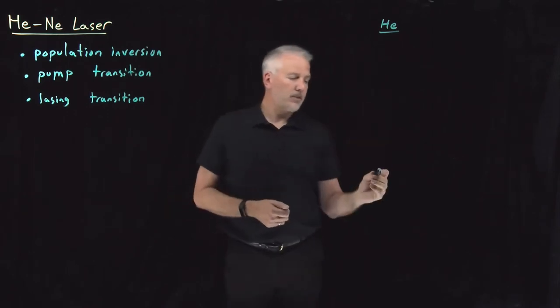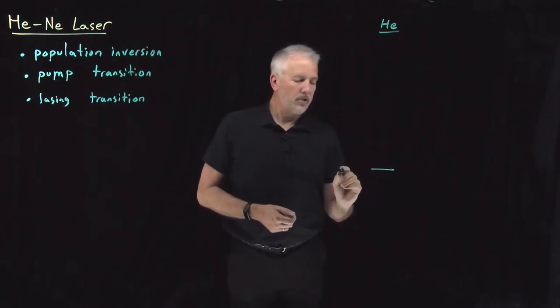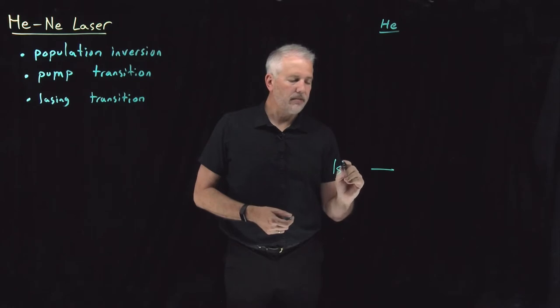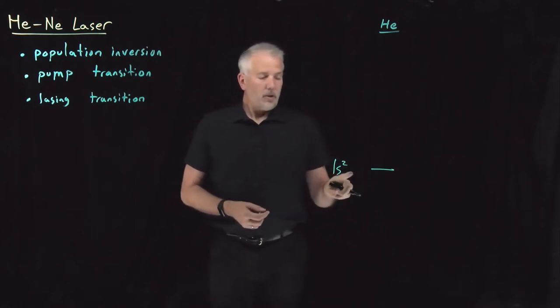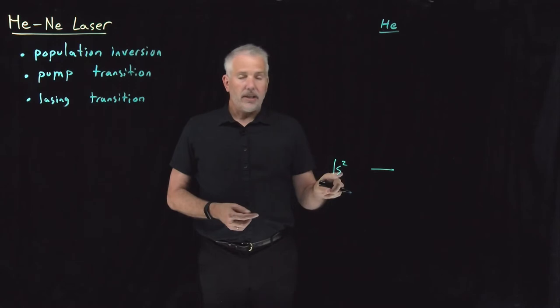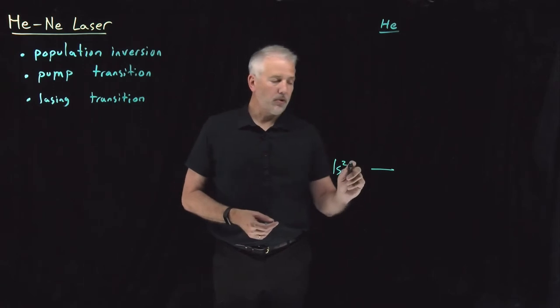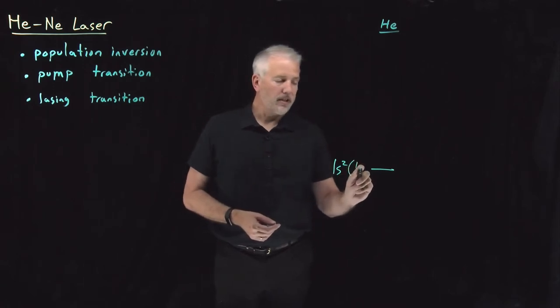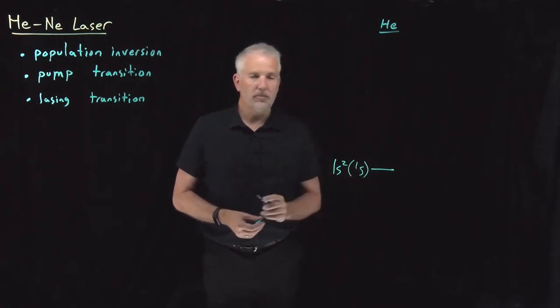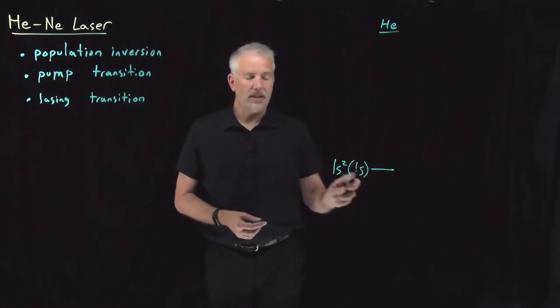So helium atoms are normally in the ground state. The ground state for the electronic state for the atoms in helium, as you know, is 1s2. If we don't want to write the electron configuration and want to be a little more accurate, we could call that a singlet S term symbol. So the ground state is a singlet S state.